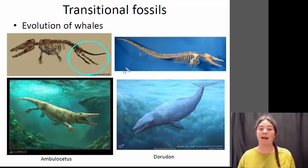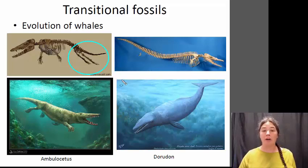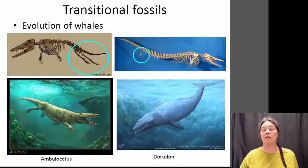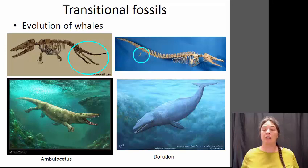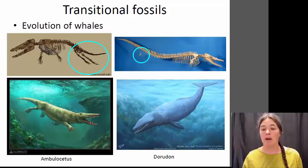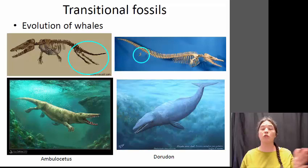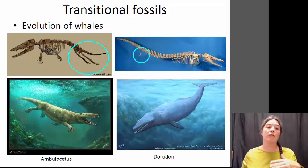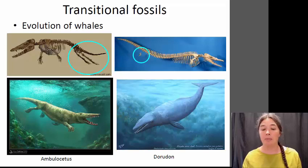Those hind legs were probably used to propel Ambulocetus through the water, but it still had those hind legs. Later fossils, such as Dorudon, show those hind limbs greatly reduced and almost absent. At that point, you have the evolution of the tail fluke that the animal uses to swim through the water. You can see this gradual progression through the fossil record: first the movement of those hind limbs further back to be used for swimming, and then the complete loss of those hind limbs.